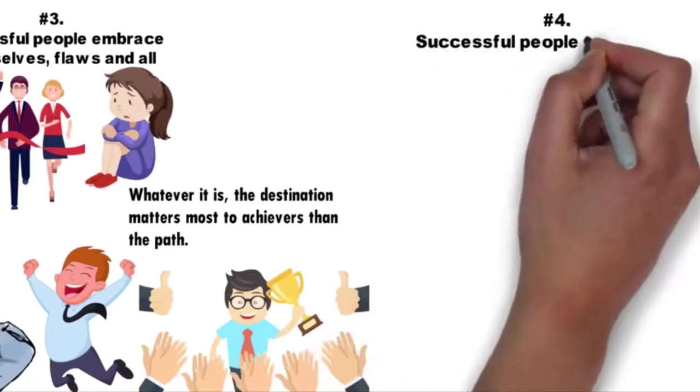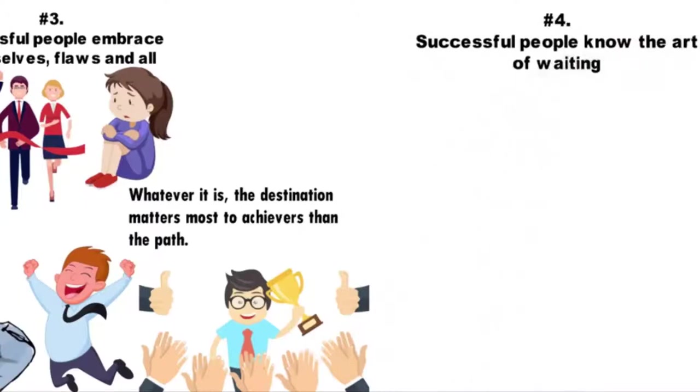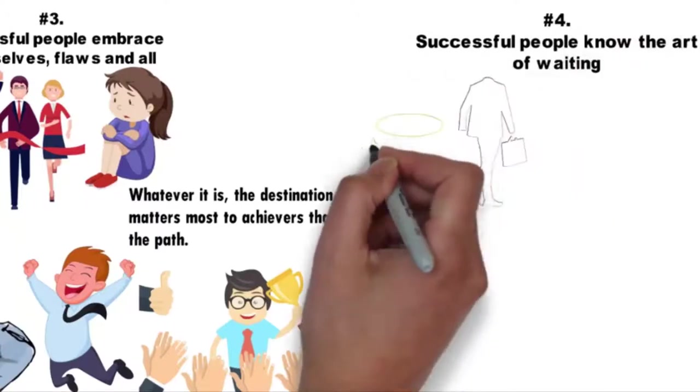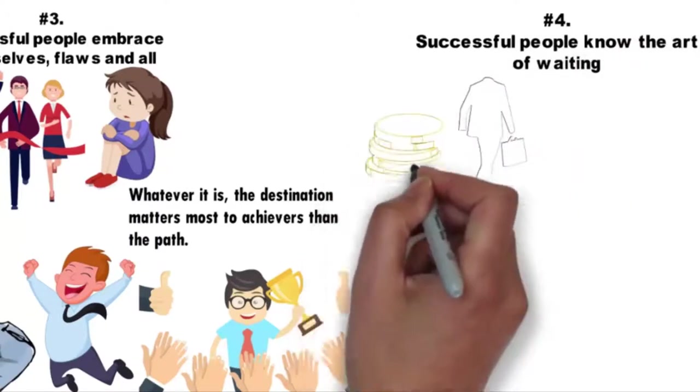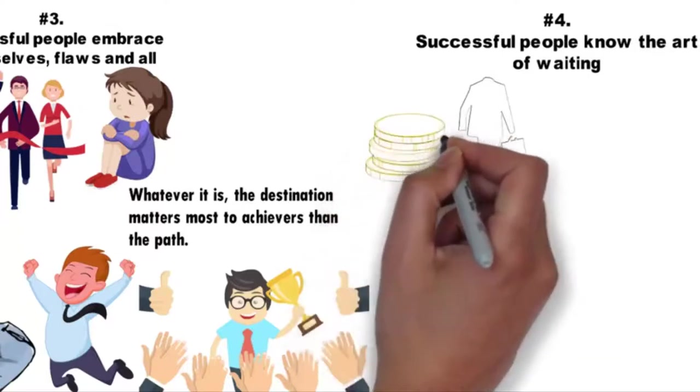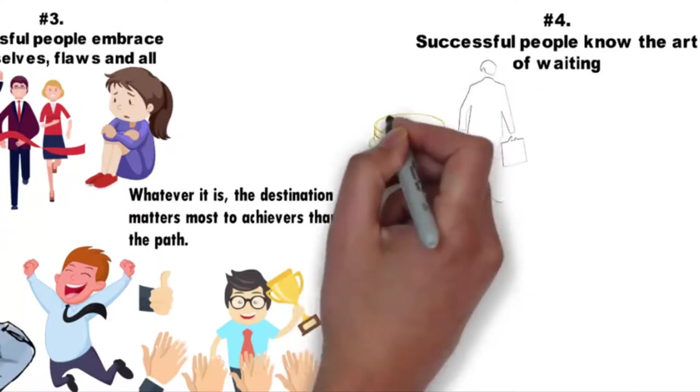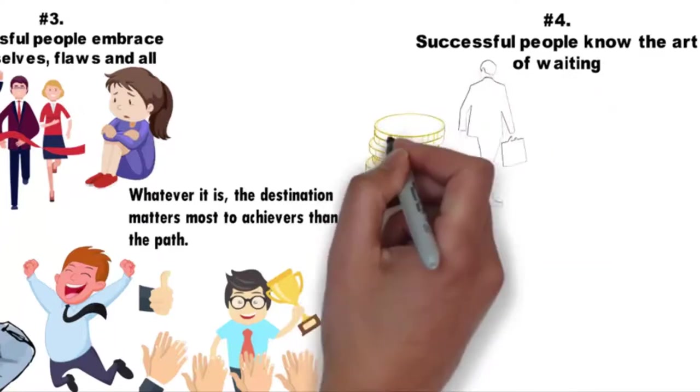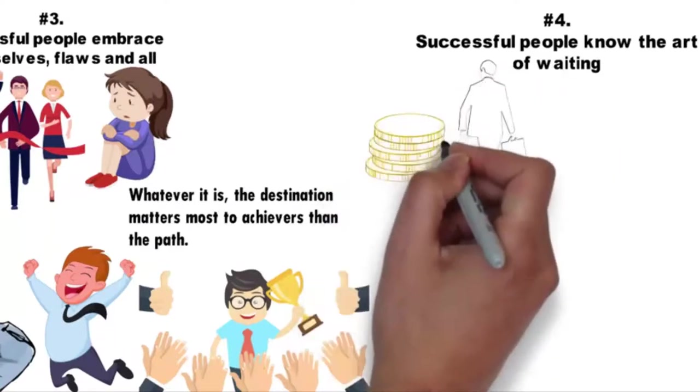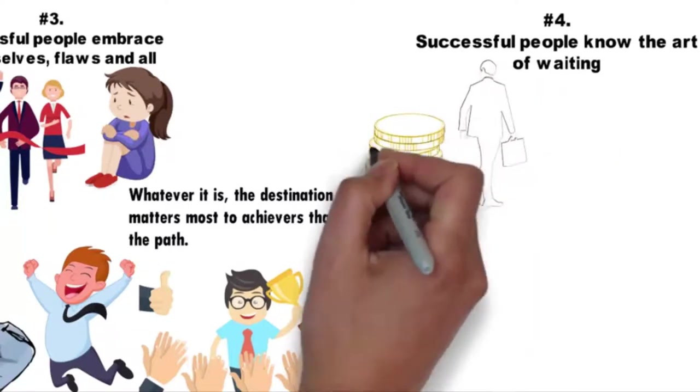Number four: Successful people know the art of waiting. Waiting is the attribute of patience. People of great success have learned over time that impatience can cost them a lot of money and investment. They chose to digest pieces of information properly before setting sail on a given venture.